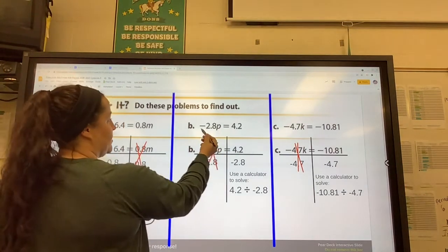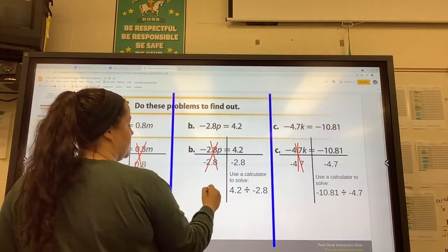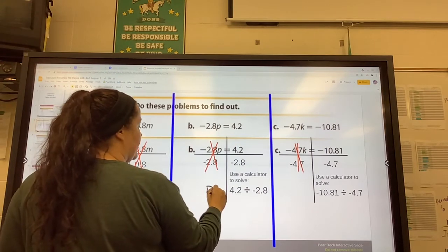Same thing over here. We want to divide both sides by negative 2.8 to get rid of it. So we're left with P on this side equals,